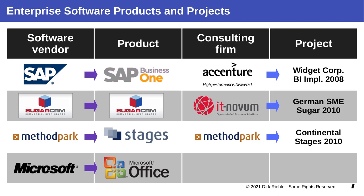Products and projects are complementary. To get business value out of standardized commercial off-the-shelf software, you actually need an implementation project to make it run on-premise or to customize it. On the left we have examples: SAP, SugarCRM, Method Park, and Microsoft — they provide a product, a canned standardized thing. To put it into action, in the case of enterprise software packages, you need a consulting firm which performs a project where that product is customized and adapted to customer needs.